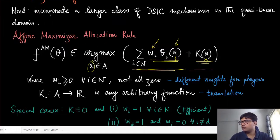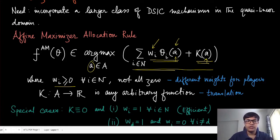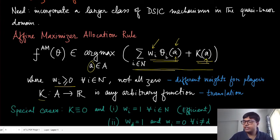We assume that the weights are non-negative — nobody is going to be given a negative weight, but all of them cannot be simultaneously zero. The function kappa has no restriction on being positive or negative; it can take any real number values.